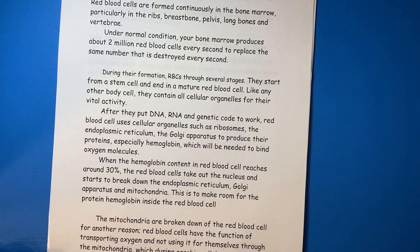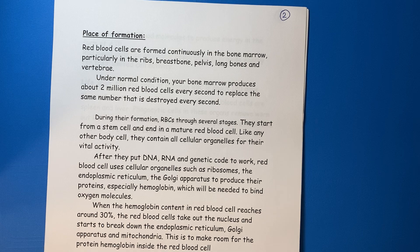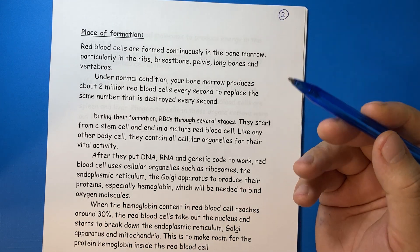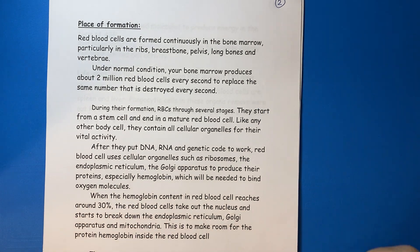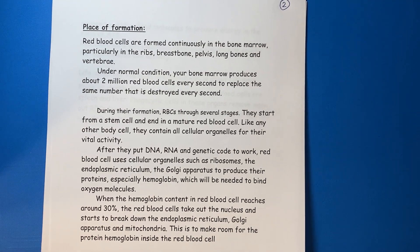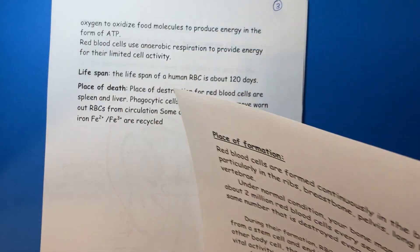Place of formation: red blood cells are formed continuously in the bone marrow, particularly in the ribs, breast bone, pelvis, long bones, and so on. Under normal conditions, your bone marrow produces about 2 million red blood cells every second to replace the same number that is destroyed every second in the liver and spleen.